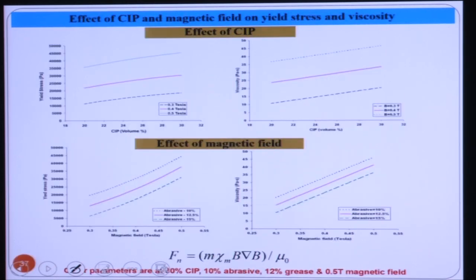Looking at the effect of CIP concentration and magnetic field: with increasing magnetic field, yield stress and viscosity both increase. When more magnetic field is applied, stronger CIP chain structures form — progressing from single columnar to thicker structures — so abrasive particles are held with higher force, giving more bonding strength and higher dipole moment, resulting in higher yield stress and viscosity.